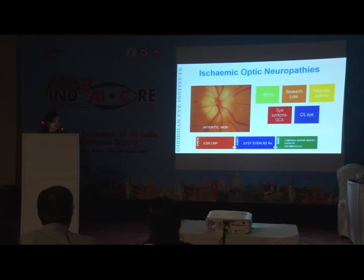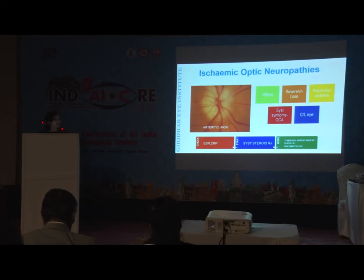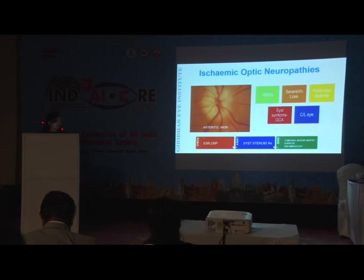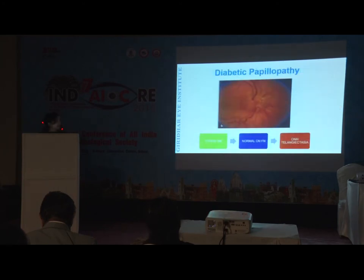The patient has pallid disc edema and systemic symptoms of GCA like jaw claudication and headache, though these are often absent, requiring a high index of suspicion. Treatment is prophylactic — you cannot restore vision in the affected eye but can prevent damage to the fellow eye. Check ESR and CRP, palpate the superficial temporal artery just in front of the pinna; absent pulsation suggests GCA. Initiate systemic steroid therapy: 1g IV methylprednisolone for three days followed by 1 mg/kg body weight oral steroids with slow taper in conjunction with a rheumatologist. This is a true medical emergency.